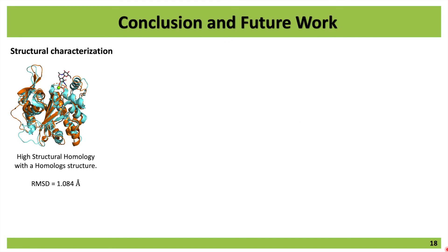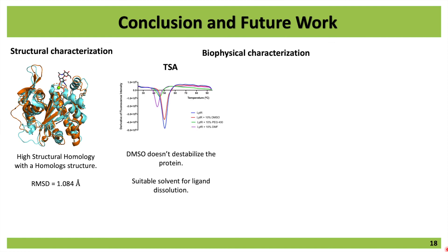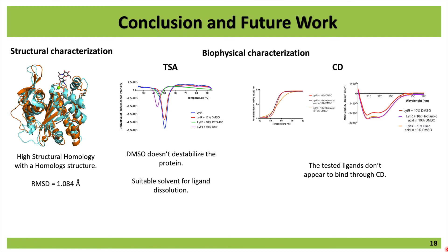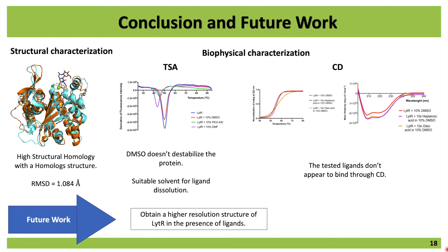The main conclusions so far: I was able to solve the structure of the protein, and it has a high structural homology with a homologous structure, with an RMSD close to 1. In terms of biophysical characterization, DMSO does not seem to destabilize the protein, and the thermal shift technique is not suitable for studying protein-ligand interactions. In terms of circular dichroism, the tested ligands do not appear to bind — this might be because the technique is not sensitive enough, or because binding is not happening at all. As future work, I want to obtain a higher resolution structure, test more interesting ligands, and explore other techniques. Thank you so much for your attention.